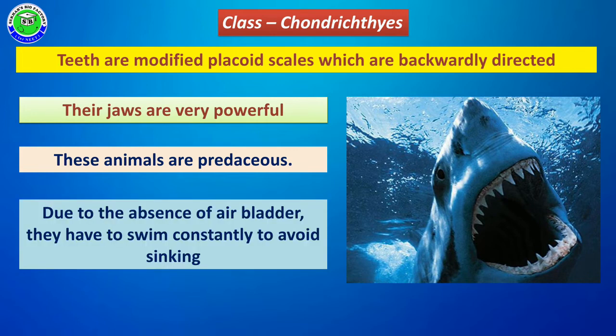Generally in these members, the body tends to shrink because they do not have an air bladder. Due to the absence of an air bladder, the body may undergo sinking. To avoid this, these members continuously move within water, and continuous swimming helps to prevent their body from sinking. This is another fundamental character of all Chondrichthyes members.